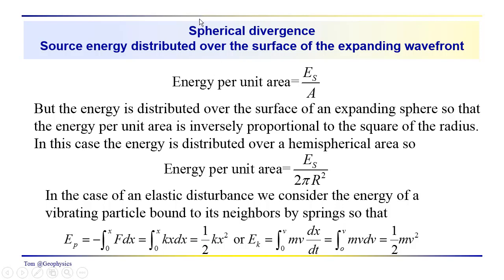Now we're going to shift over to another amplitude reduction mechanism: spherical divergence. This is a simplification assuming the wavefront is a sphere. The idea is that the energy in the wavefront is distributed over the expanding surface area of the wavefront as it propagates down to a reflector and back to the surface. A certain amount of energy is created by the source and gets distributed over the area of the wavefront. Energy per unit area is inversely proportional to the square of the radius. Because we're dealing with a hemisphere, the area is 2πr², so energy per unit area is inversely proportional to r².